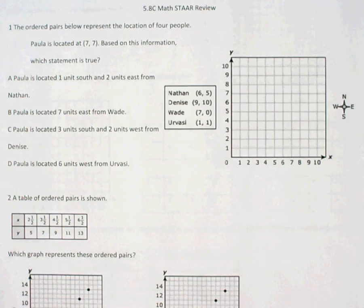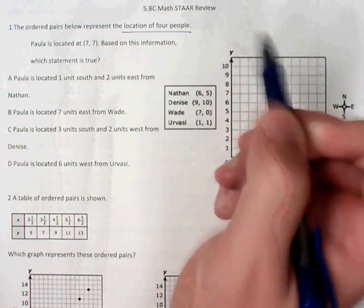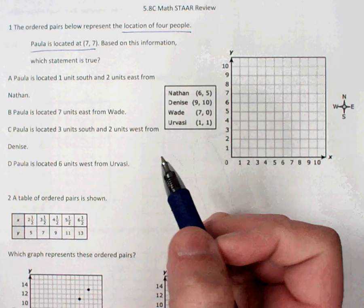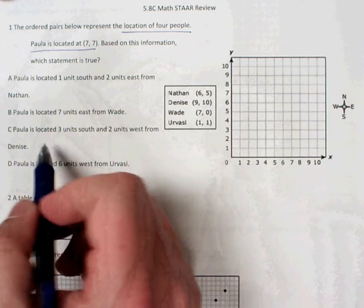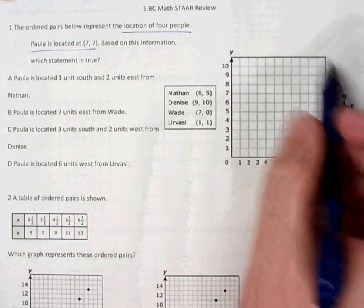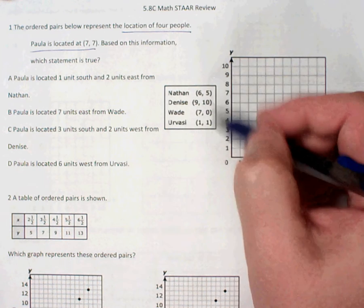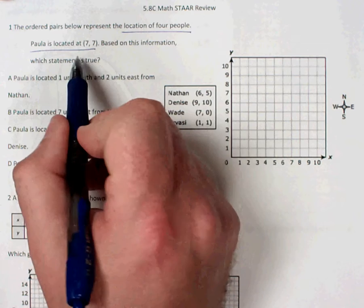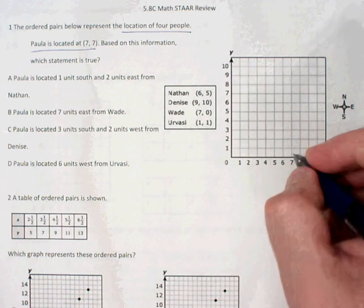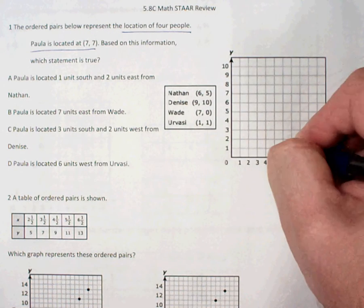Number one, the ordered pairs below represent the location of four people. Paula is located at (7,7). Based on this information which statement is true? So in the coordinate plane, I'm given a list with the points where everyone is and then I'm told in the problem where Paula is. So the first thing I probably want to do is I want to plot these points.